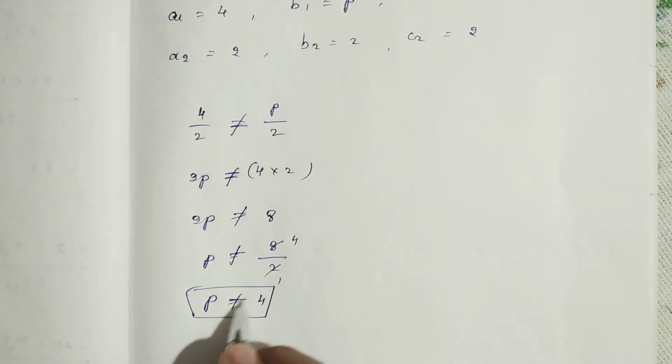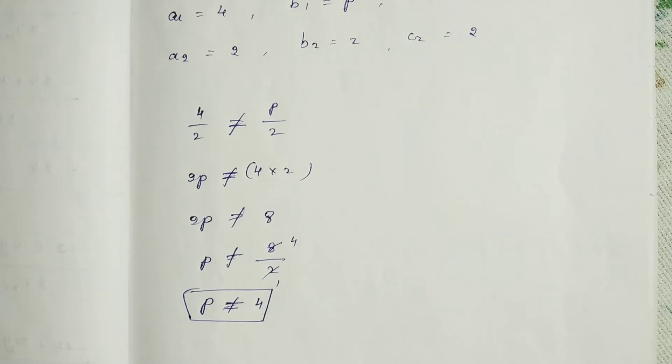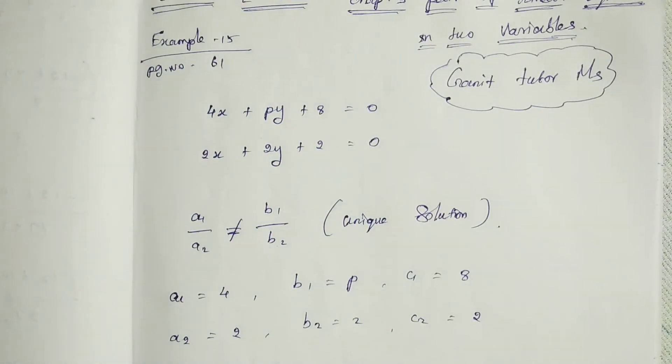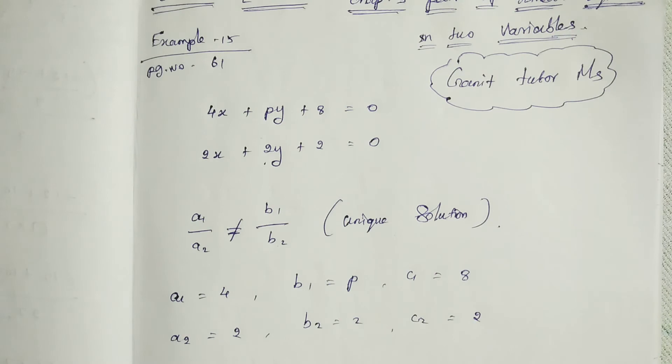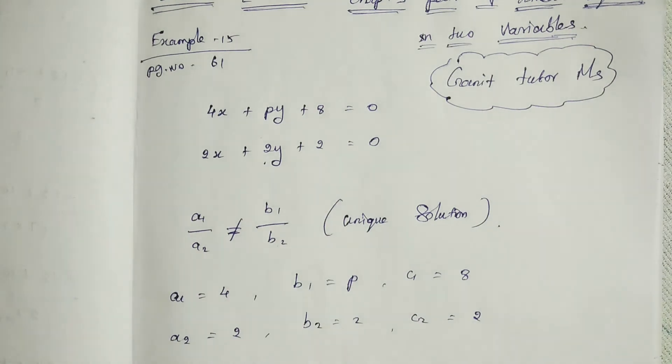So what we learned from this one: actually p not equal to 4. So you can put any number in this equation. Instead of p, you can put any number except 4, then the given pair of linear equations has a unique solution. So except 4, the given pair of linear equations has a unique solution. You can put any value. Except 4.